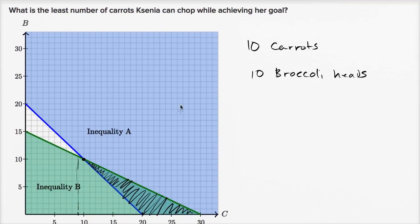That's the combination that has her chopping the minimum number of carrots while achieving both of her goals: being under time and chopping at least 20 vegetables.